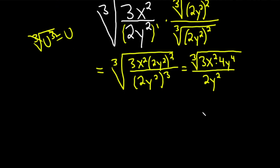Almost done. This will be equal to, 3 times 4 is 12, so we're going to get the cube root of 12. Okay, and then we're going to have x squared.